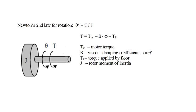The rotor-wheel combination has moment of inertia J, and there are three applied torques: the motor torque T_M, a torque due to viscous damping which equals B times omega (where B is the damping coefficient of the rotor), and the torque that the floor applies to the wheel, T_f. We have expressions for the motor torque and the viscous damping torque. How about the floor torque?